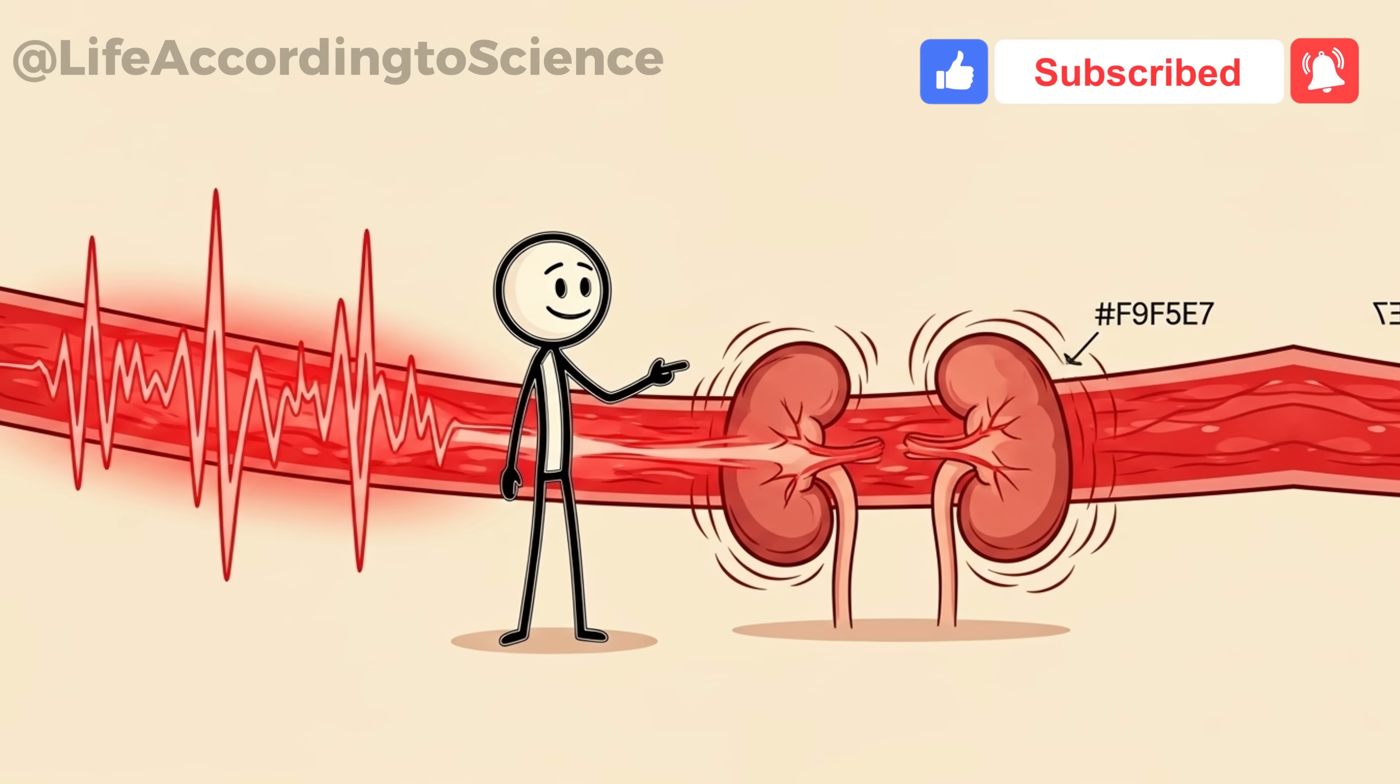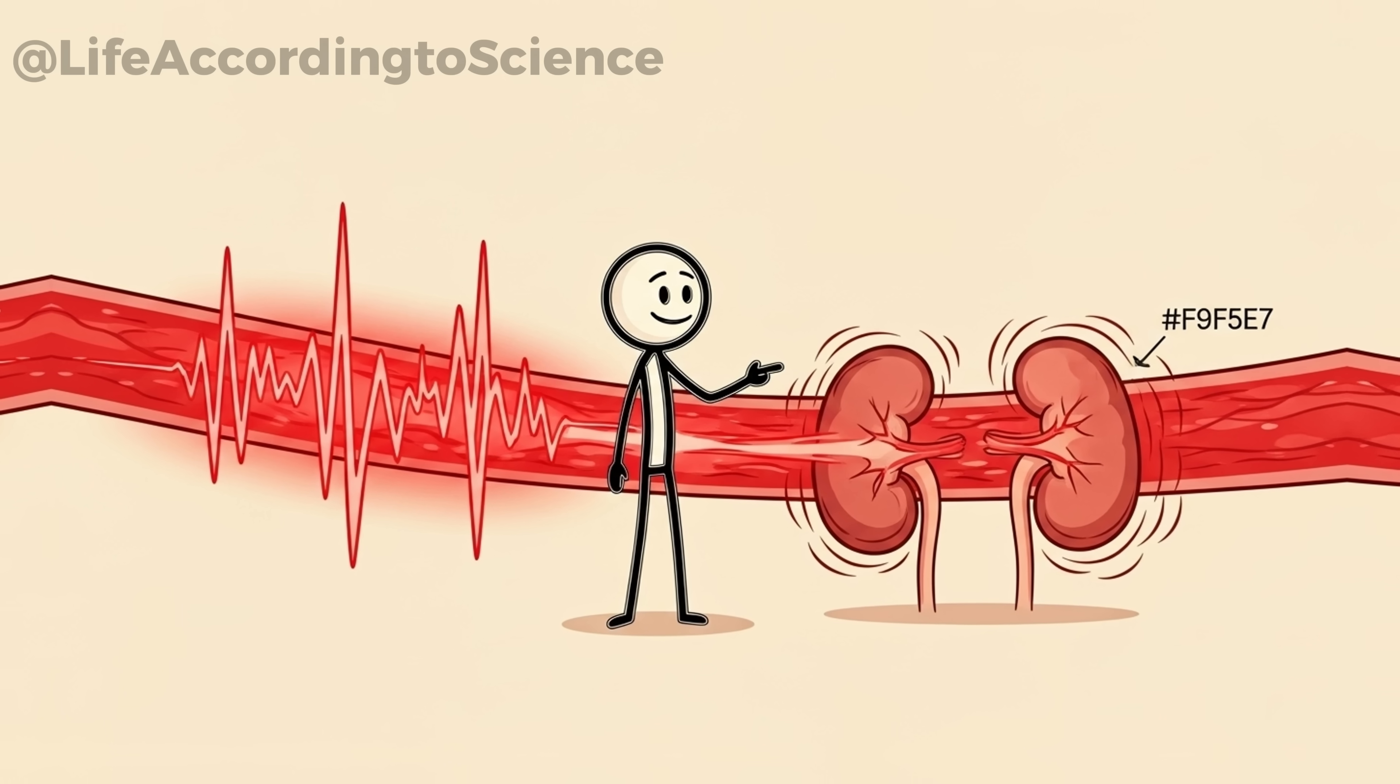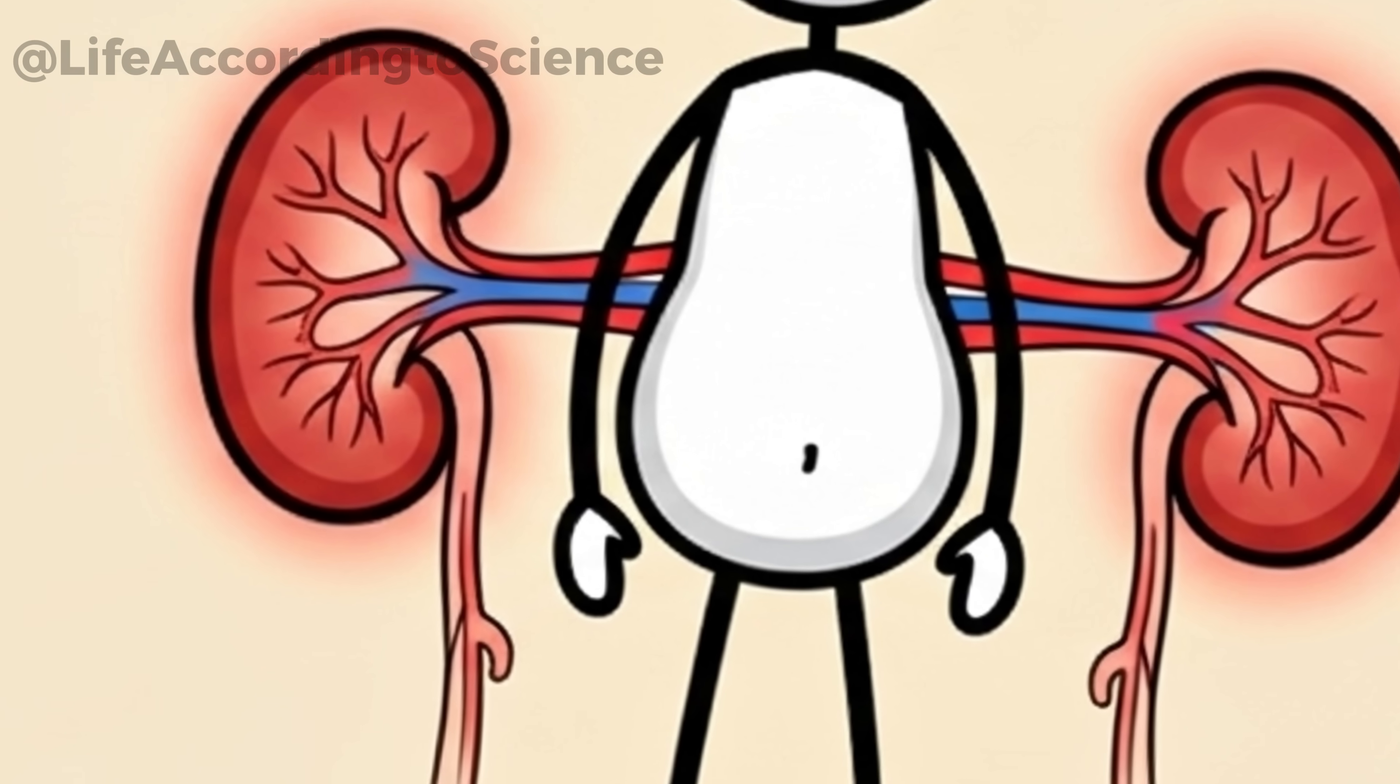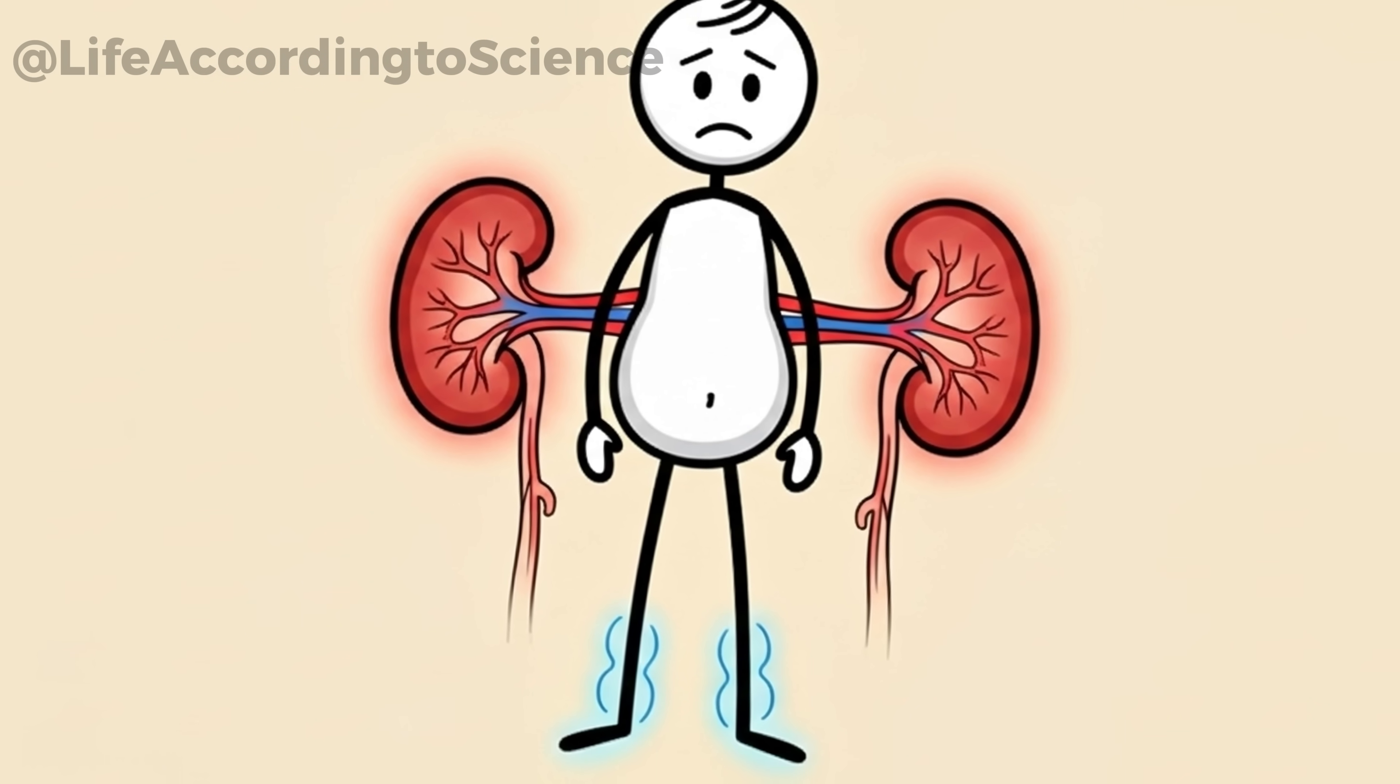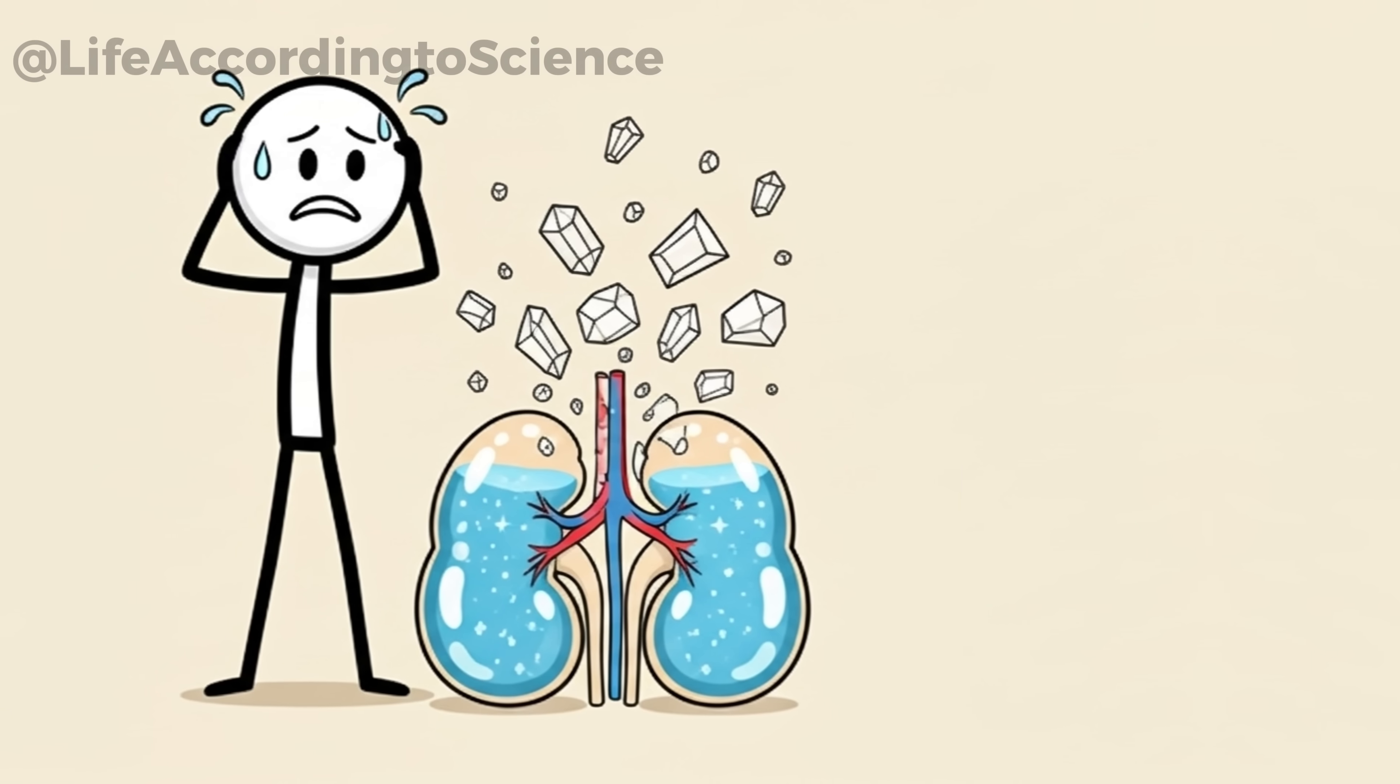Sugar doesn't just mess with your blood glucose, it also hijacks your blood pressure. When you eat too much sugar, insulin levels rise, which signals your kidneys to retain sodium and water. The result? Higher blood pressure, swelling, and strain on the kidneys' blood vessels. This mechanism explains why people who consume large amounts of sugar often feel bloated and fatigued.